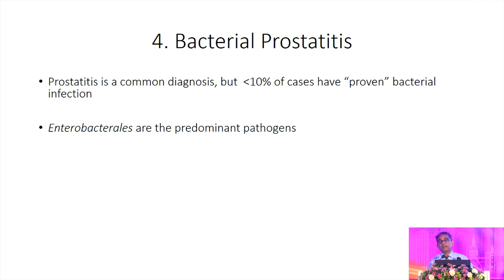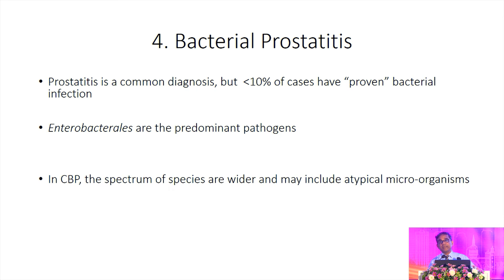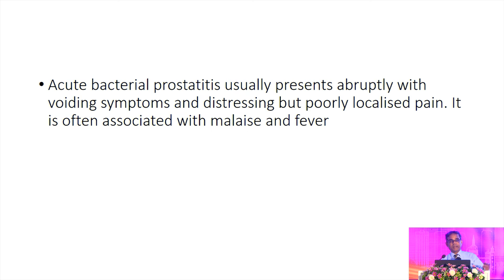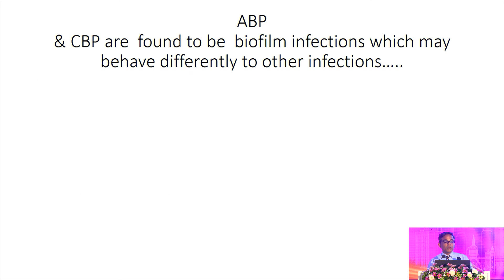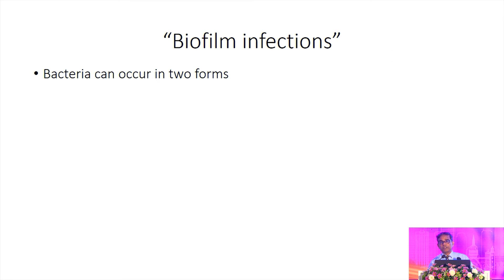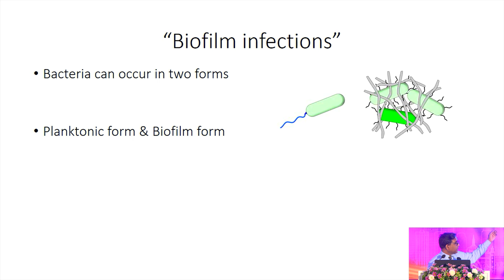Bacterial prostatitis is another atypical course because it needs a longer duration of treatment. Acute bacterial prostatitis usually presents abruptly and can go into sepsis if not managed properly. Both acute and chronic bacterial prostatitis recurrence can be caused by biofilm infection. With biofilms, you cannot use routine antimicrobial doses — you might have to give increased doses and add some biofilm-active antimicrobials to get a good outcome. We generally test microorganisms with the planktonic form, so we have to be extra careful when handling cases of acute or chronic bacterial prostatitis.